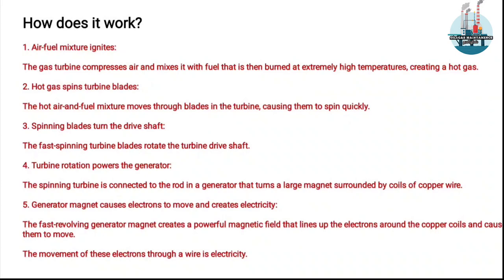We mix the air and fuel; it will ignite. When the temperature is high, it will expand as hot gas. The turbine will spin — the blades will rotate, and the shaft will rotate. The shaft will be connected to the generator, and the generator will be connected to the magnetic field to produce electricity.